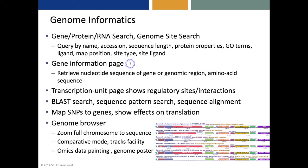There's a gene information page and a transcription unit page that shows regulatory sites and interactions. There's BLAST search, sequence pattern search, and sequence alignment. There's an ability to map SNPs to their nearest genes and show the effects on translation. And there's a genome browser that can zoom from the full chromosome in one screen to the sequence level, with a comparative mode where we can align genome regions at a common gene. There's also a TRAX facility, and we can paint omics data onto the genome map and produce a genome poster for an organism.